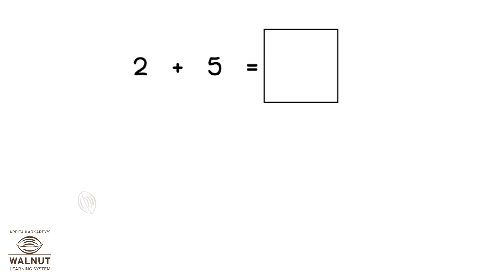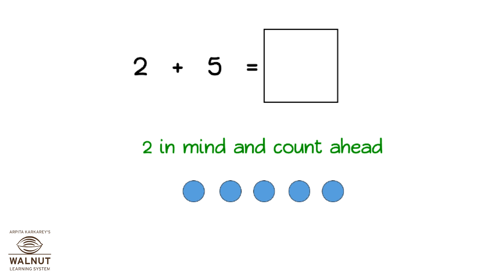2 plus 5. We keep 2 in mind and count ahead. 3, 4, 5, 6, 7. So, 7 is the answer.